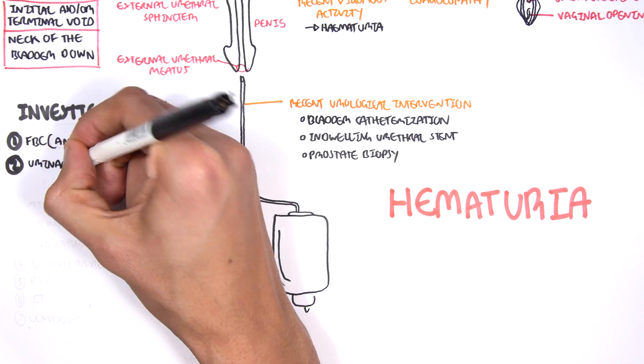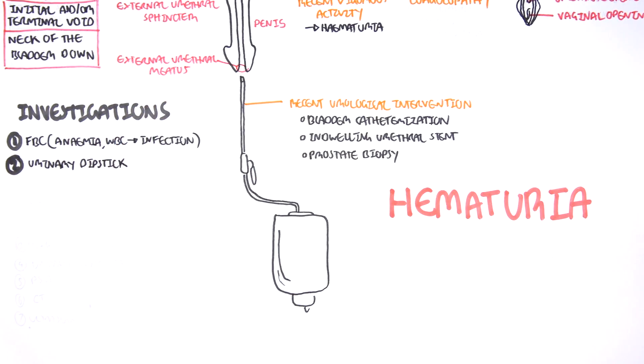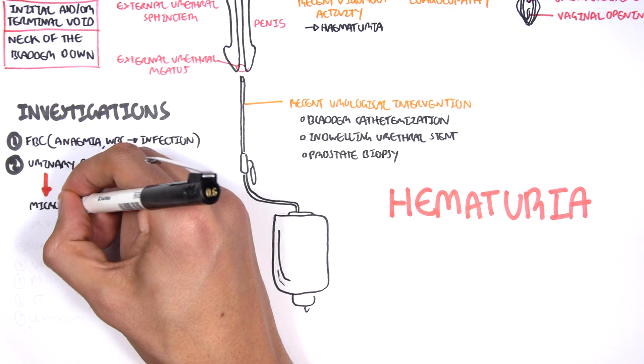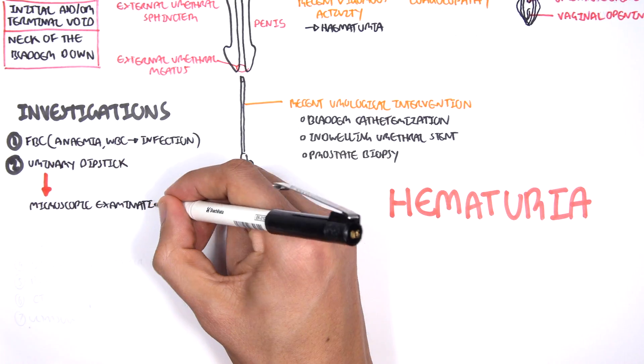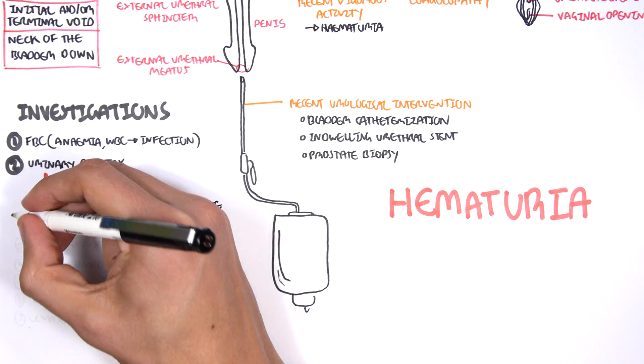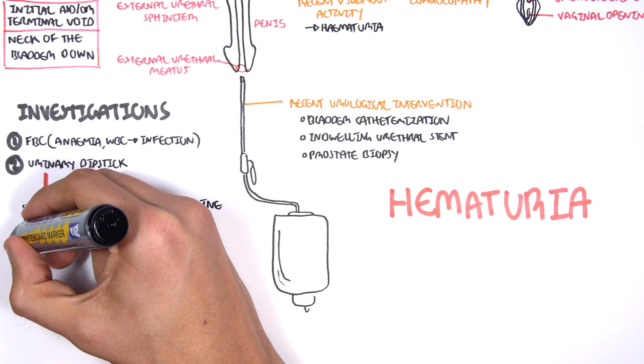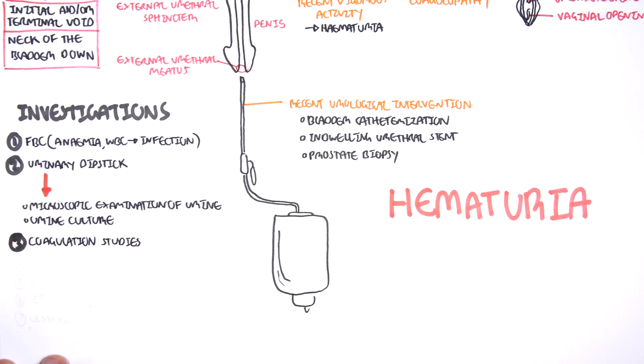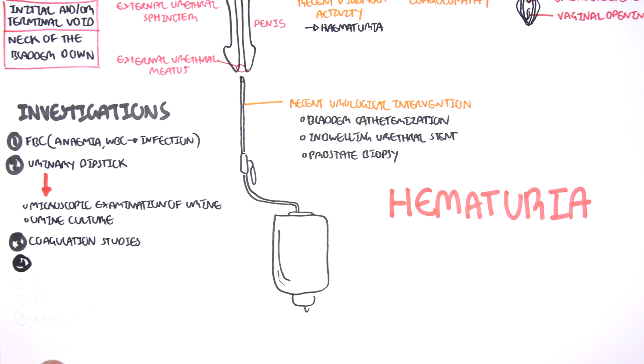Then you also have urine dipstick. With urine dipstick, you can then use it to have a microscopic examination of the urine and also culture the urine to see if any signs of infection, bacterial growth. Then you can also perform coagulation studies to check if the patient has any coagulopathies.